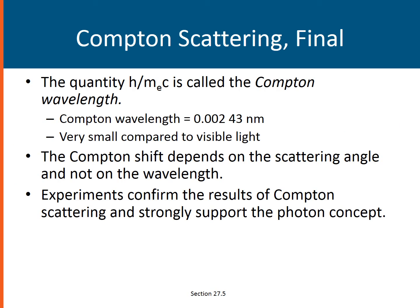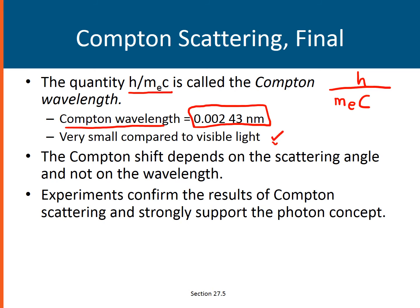Here are some final notes on Compton scattering. The quantity h over m_e c is called the Compton wavelength. Since Planck's constant h divided by m_e c are all constants, they lead to a constant value known as the Compton wavelength, which has the value of 0.00243 nanometers — very, very small compared to the wavelength of visible light.